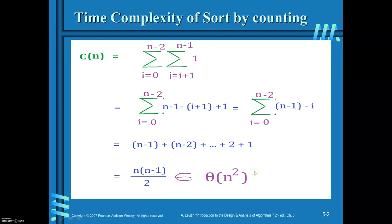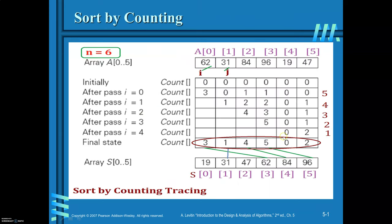This is an example of input enhancement because for every element you are associating additional information — specifically, the count — to the input, in order to speed up the sorting. This way of finding the solution for any problem by augmenting the input is called input enhancement. Sort by counting is a classic example of input enhancement.